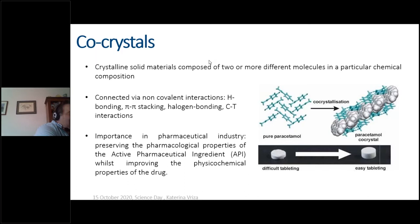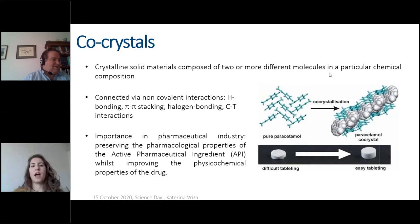I will start by explaining what is a co-crystal. Co-crystals are basically a combination of two or more different molecules that are combined with different non-covalent interactions such as hydrogen bonding or pi-pi stacking. They are very important for the pharmaceutical industry because they can preserve the properties of the active pharmaceutical ingredient whilst the physical chemical properties of the drug remain unchangeable. Although they are very important for drugs and pharma, their applications are not only limited to them.